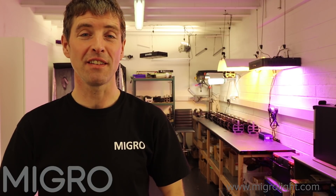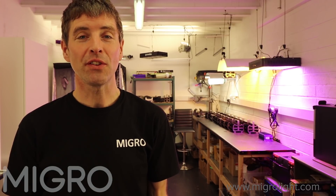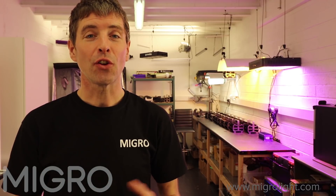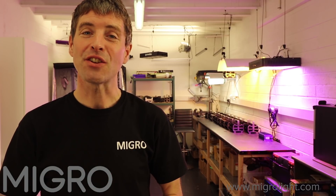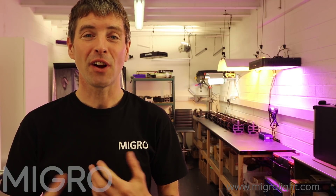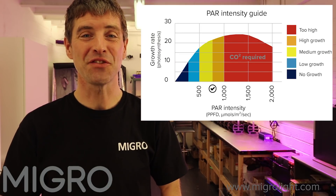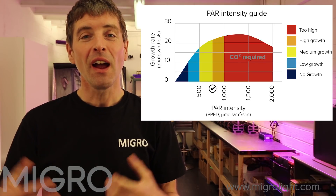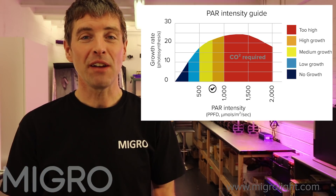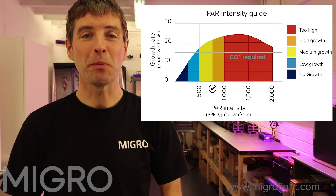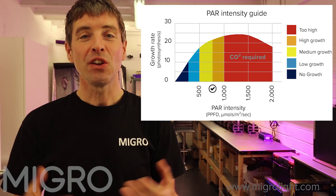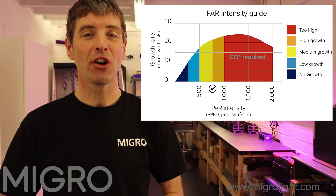First we look at the level of light intensity that the plant is receiving. When we're talking about photosynthesis we're going to be talking about light in terms of the horticultural reference which is PAR — photosynthetically active radiation. At PAR levels up to 1500 micromoles per meter squared per second, you get increased growth rates.